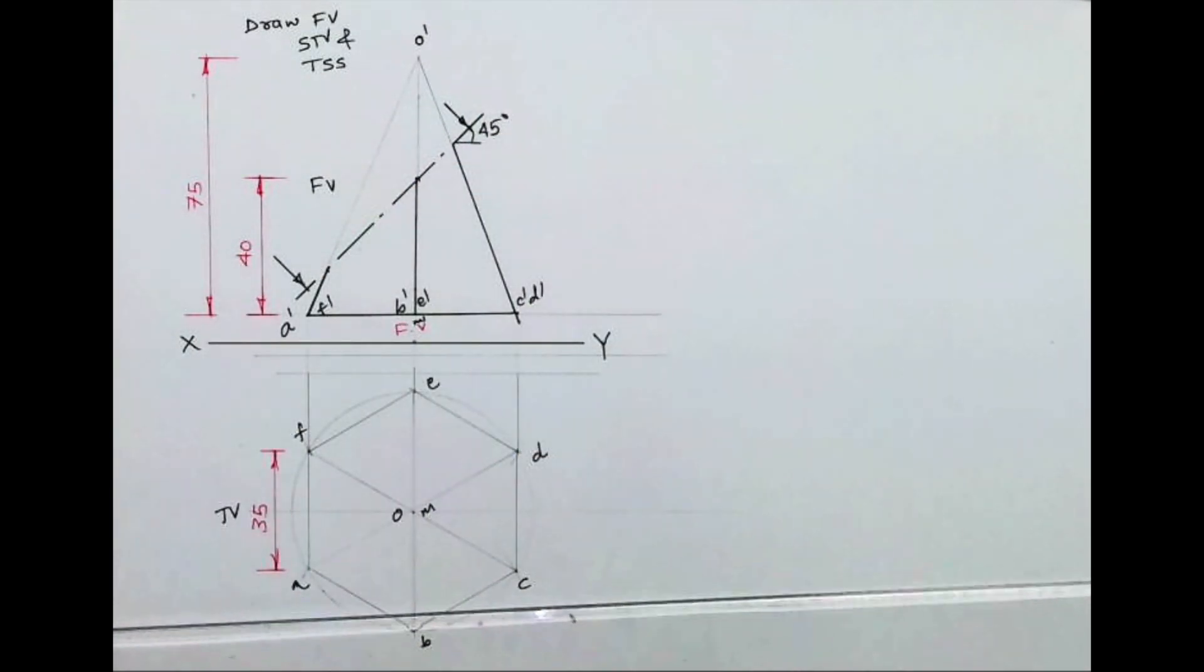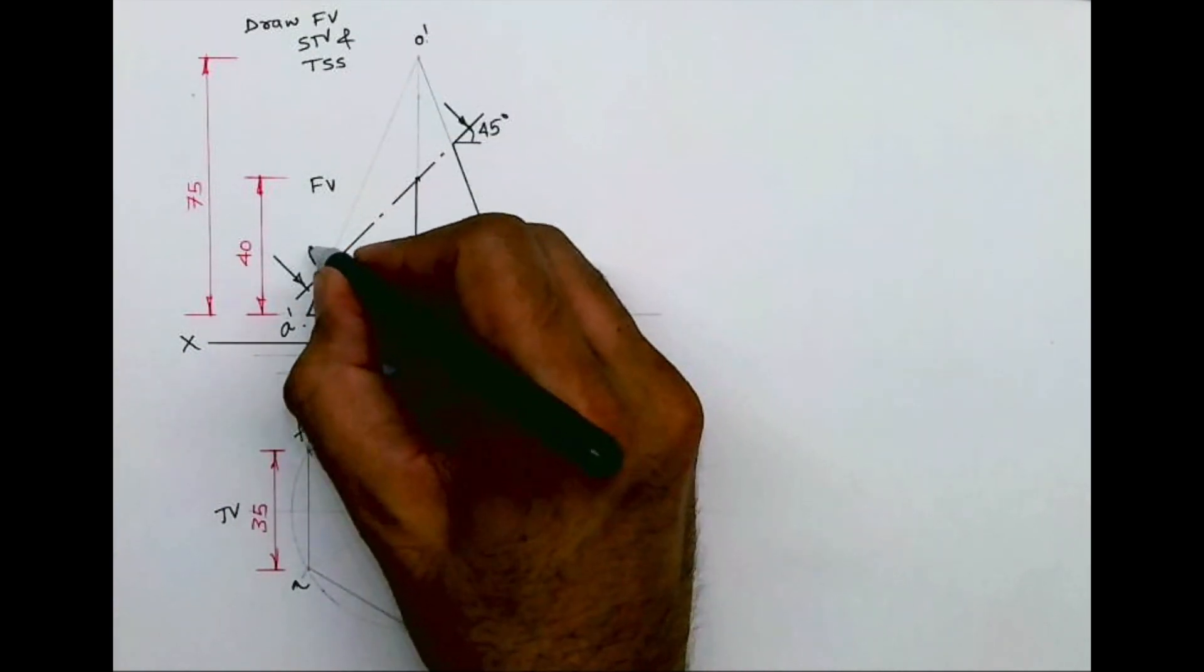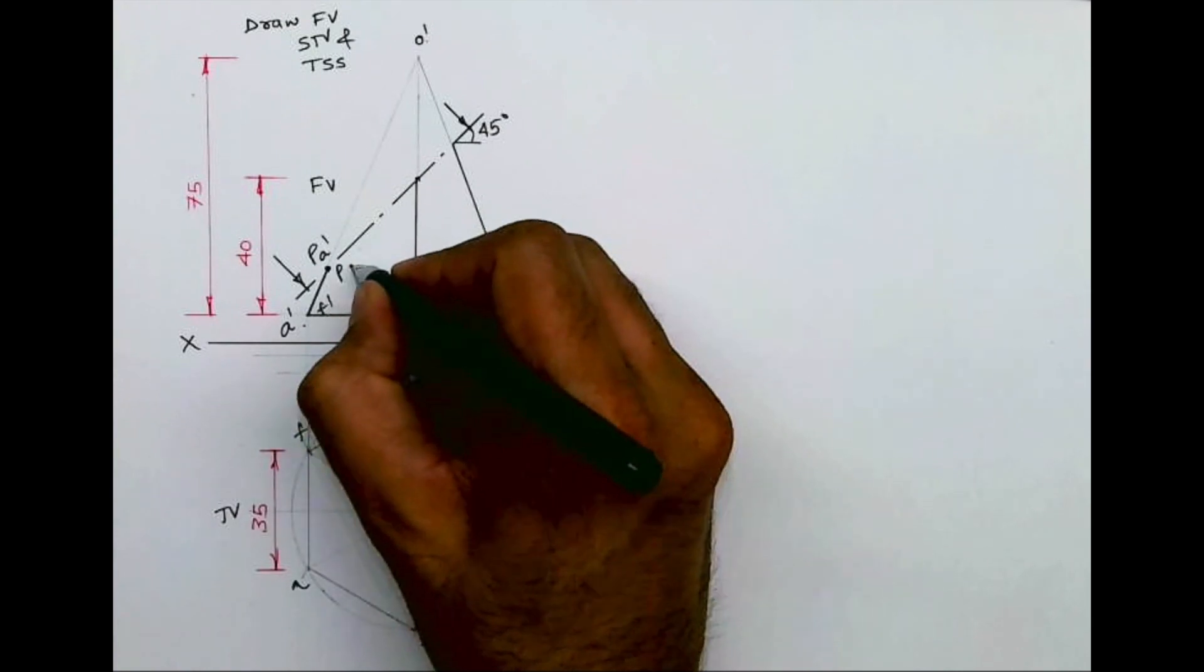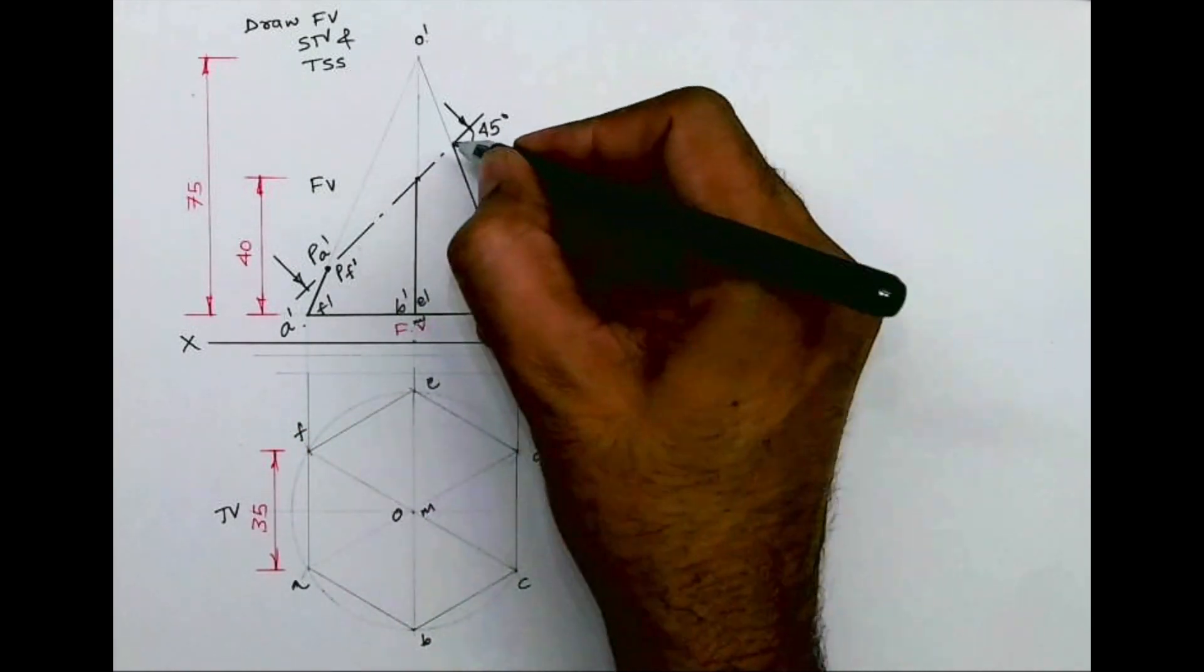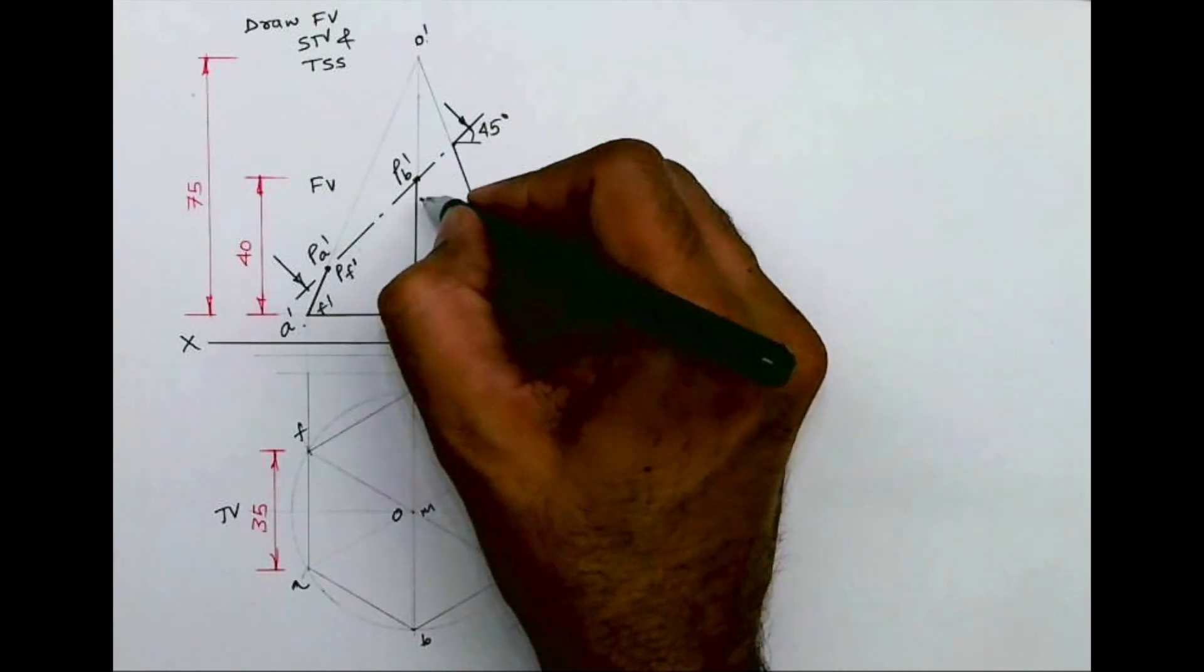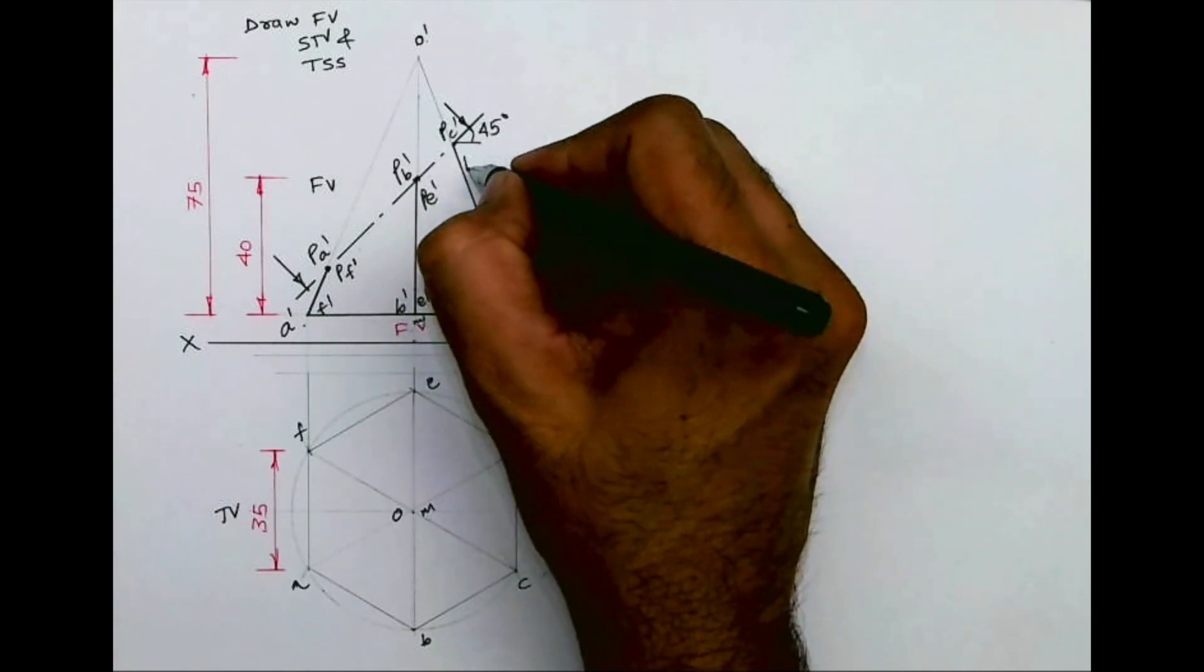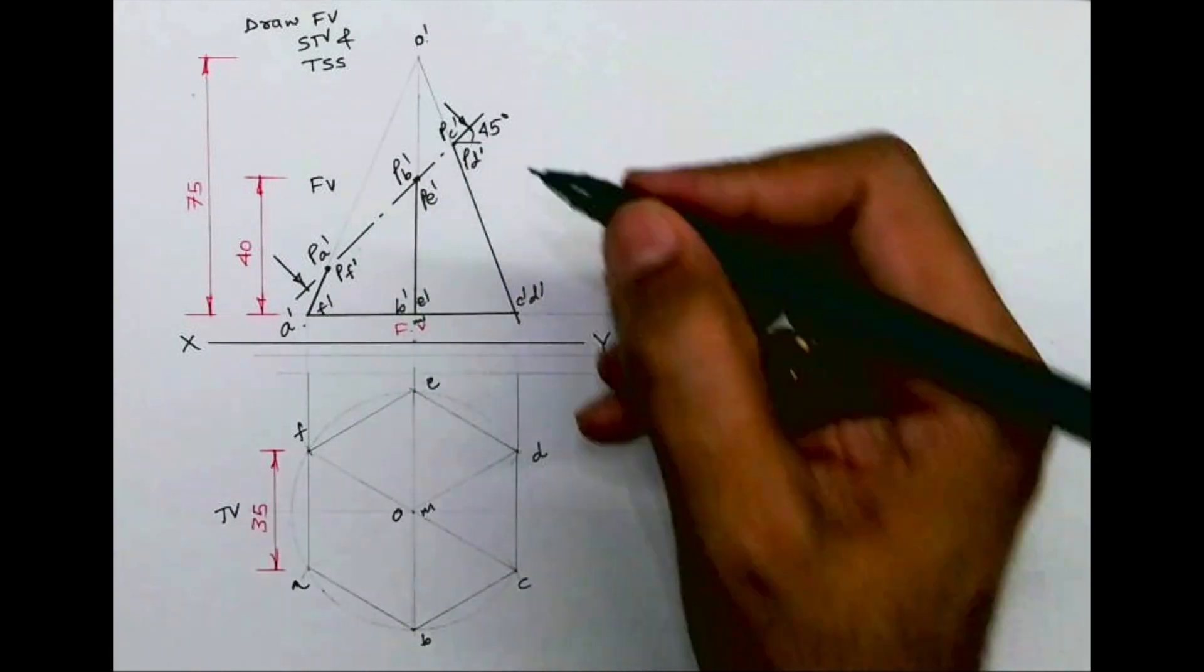Now we'll see how many points we are getting: O dash A dash, O dash F dash. So here I will write PA dash and PF dash. Here is also getting cut, so O dash B dash gives us PB dash and PE dash. Same way, PC dash and PD dash. So you'll get six points.